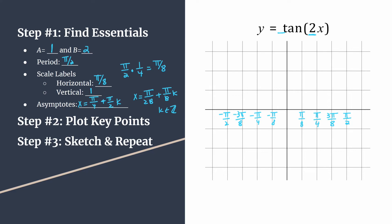Let's count by ones for our vertical axis: 1, 2, 3, negative 1, negative 2, negative 3. Now we're ready to plot our key points. Remember, the pattern is point, point, asymptote, point — it'll be this pattern every single time for these basic tangent graphs.